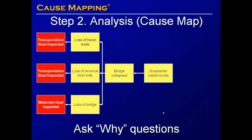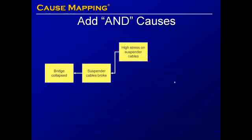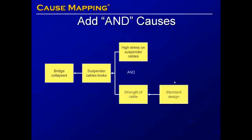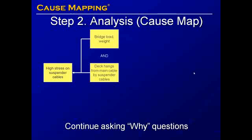The bridge collapsed because the suspender cables broke. We can continue to add detail by asking why questions. The suspender cables broke because of high stress on them. We can also ask what else had to happen to produce this effect to come up with multiple causes joined by 'and.' Suspender cables broke due to the high stress on them and the strength of the cable — in this case, the cable was a standard design. What caused the high stress? It was caused by the bridge load and weight, and the deck hanging from the main cable by the suspender cables due to the design of the bridge.